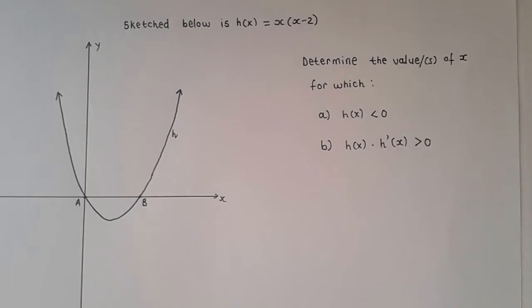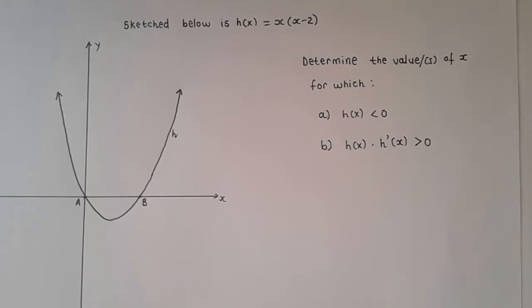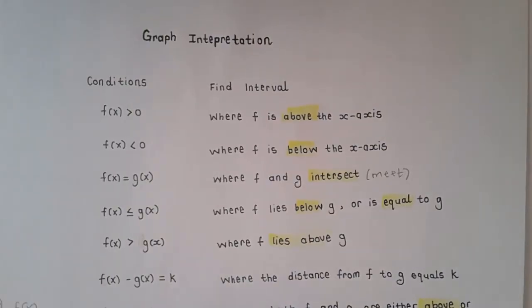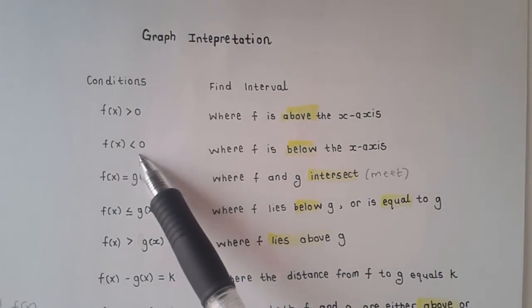So we have sketched below h of x equals x times x minus 2. We can see the sketch of h of x, which shows us a parabola. Here are the questions: determine the value or values of x for which — the first part is h of x less than 0. Let's go back to the conditions we spoke about. That one is talking about f of x less than 0.